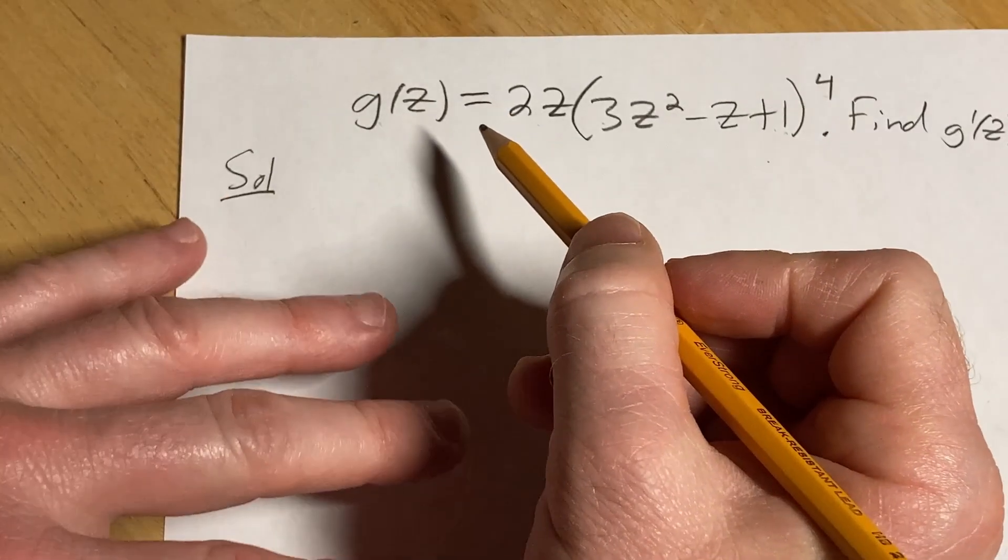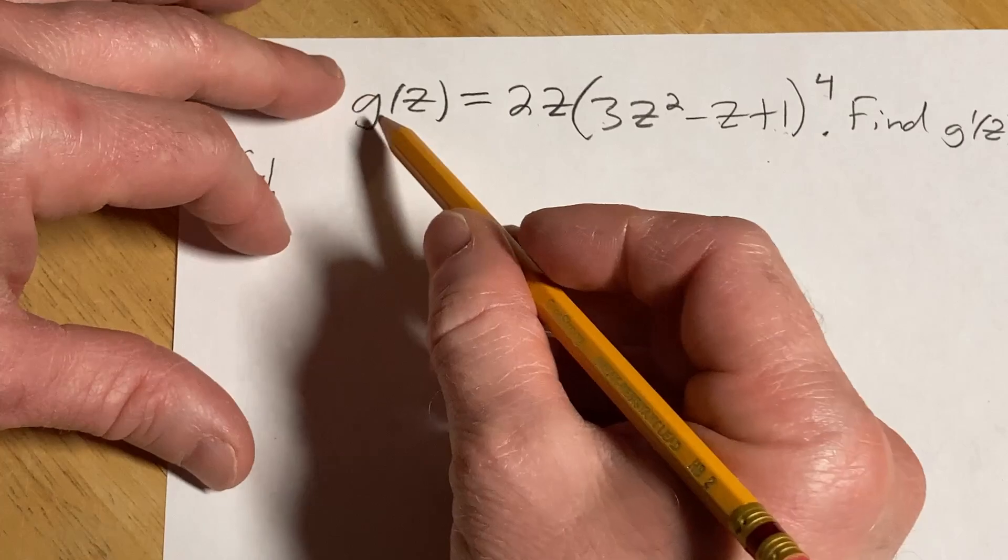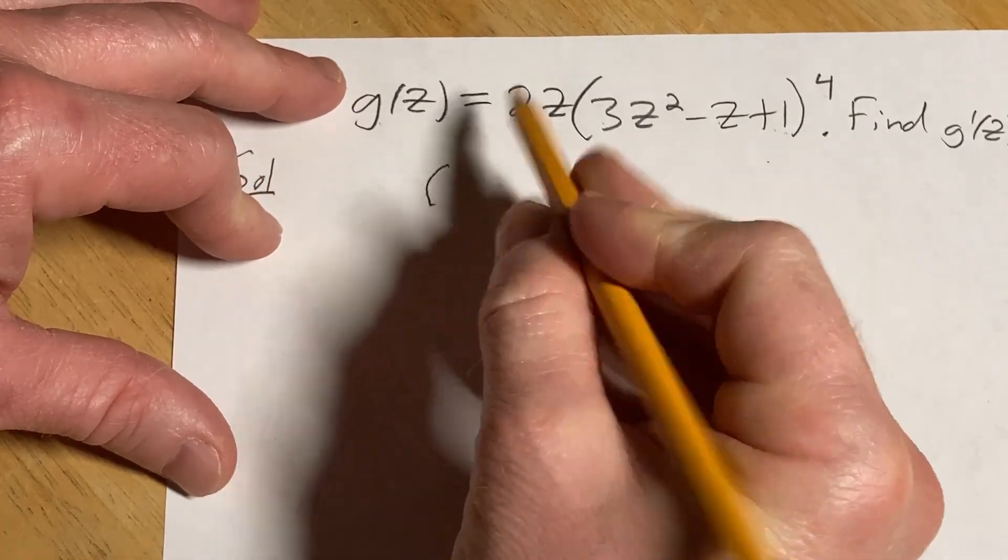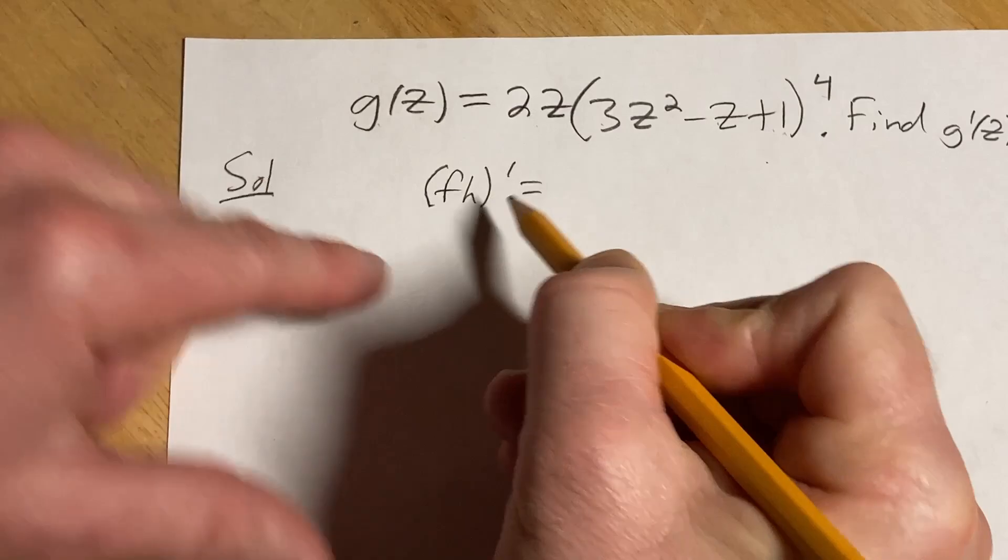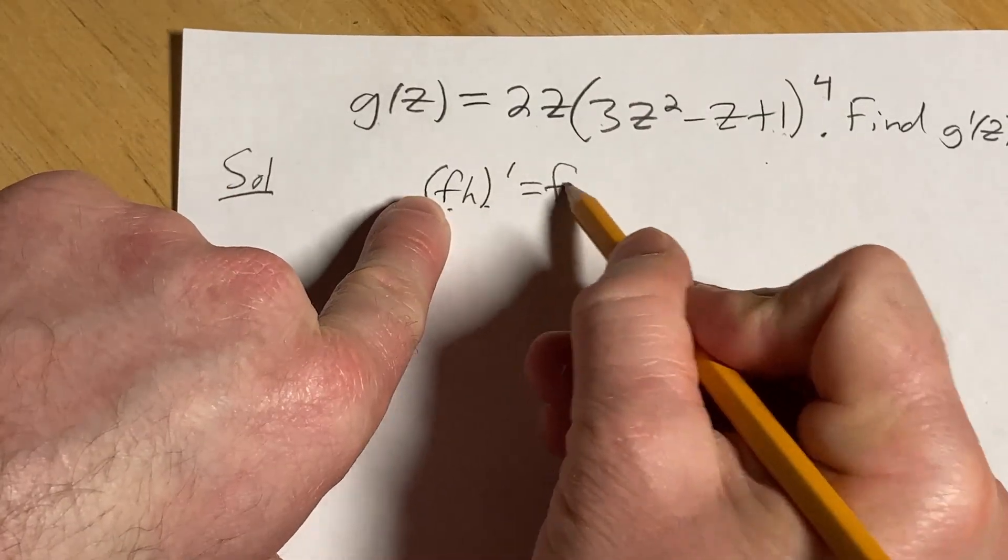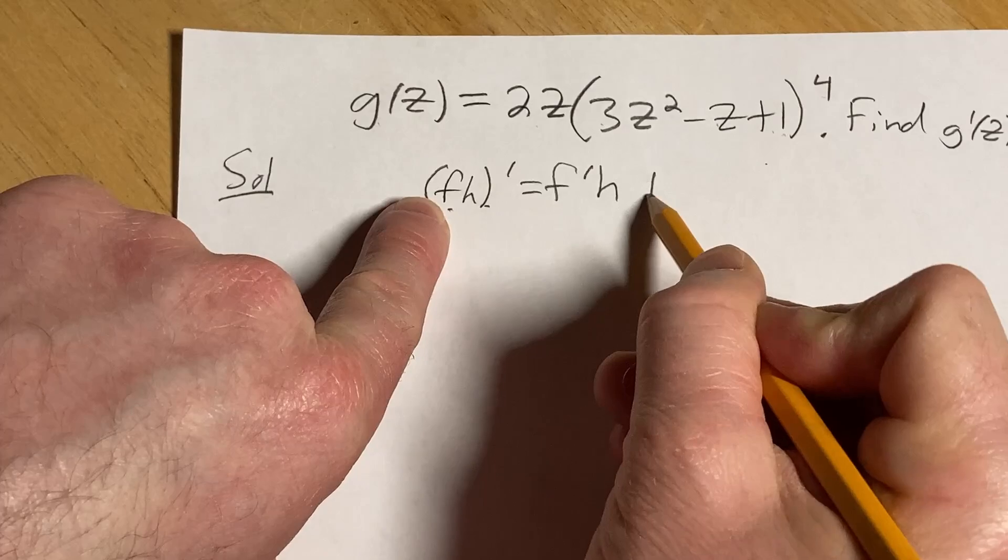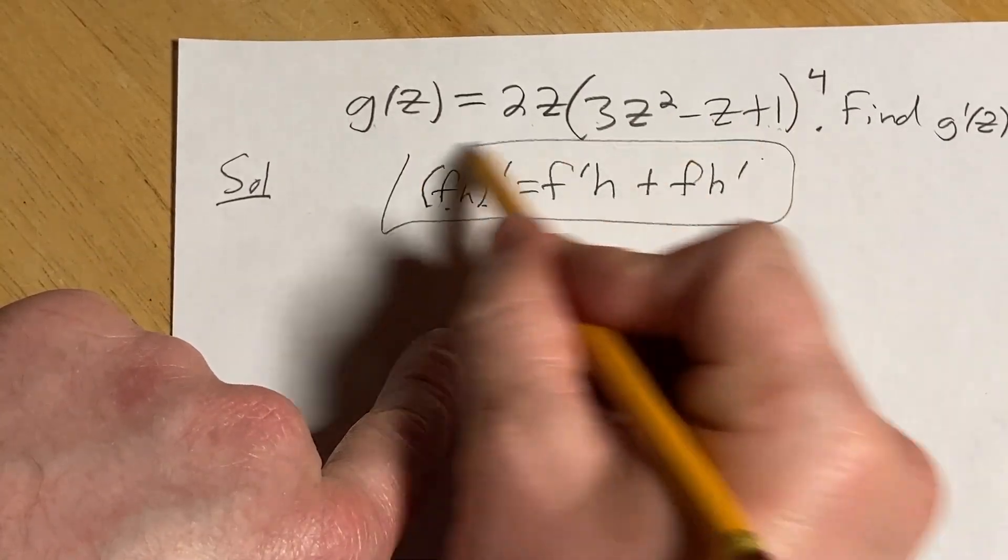So there is a formula we're going to use. It's called the product rule, and normally when the product rule formula is written, people use f and g. I'm going to use f and h. Think of f as your first function and h as your second function. It's the derivative of the first times the second plus the first times the derivative of the second. So this is the famous product rule.